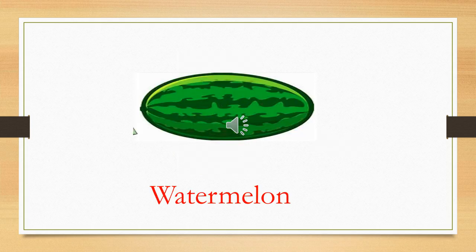Another thing — which fruit is this? It is green in color and red inside. Yes, watermelon! Now what is the shape of the watermelon? Right, it is oval. Once more — oval.